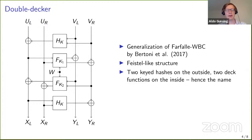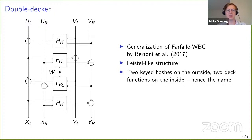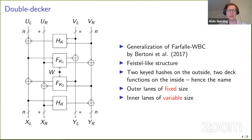There are two keyed hash functions on the outside, and because they only have a fixed size output, they only write a part of the lanes. There are also two DAG functions on the inside, hence the name. The outer lanes are of fixed size, and the inner lanes are of a variable size.